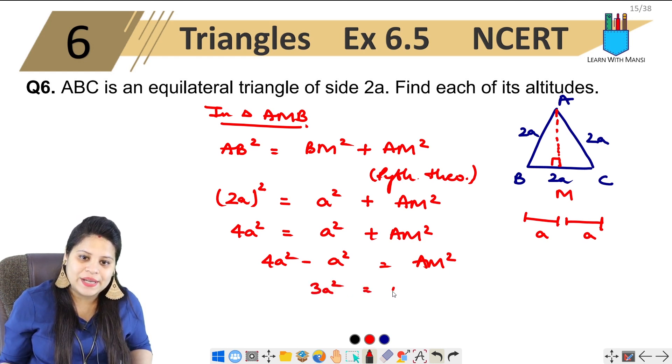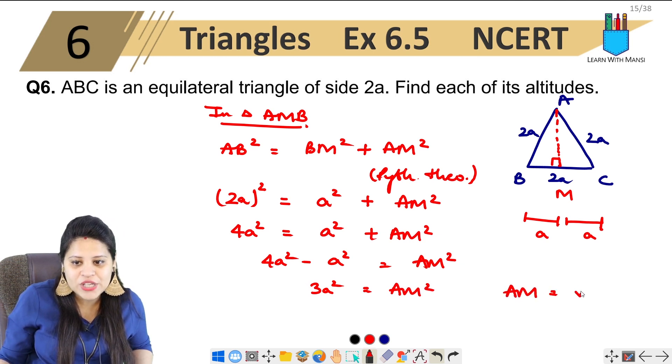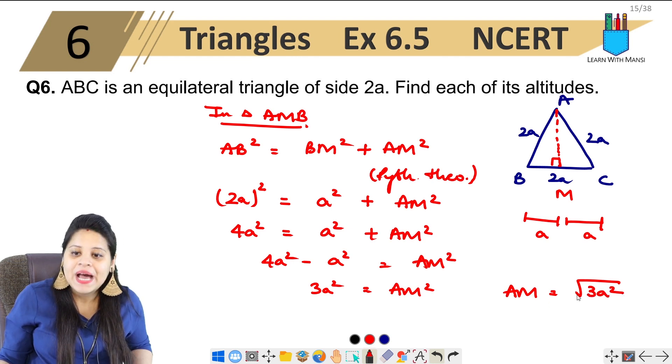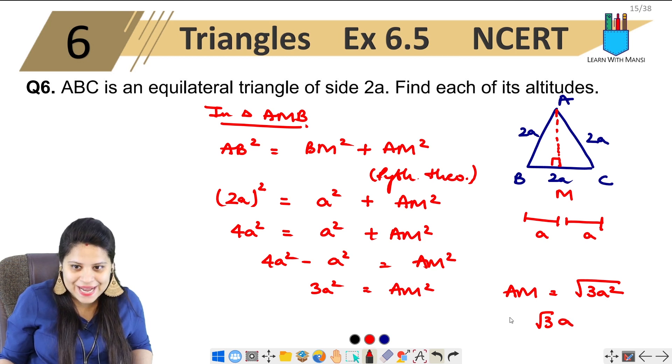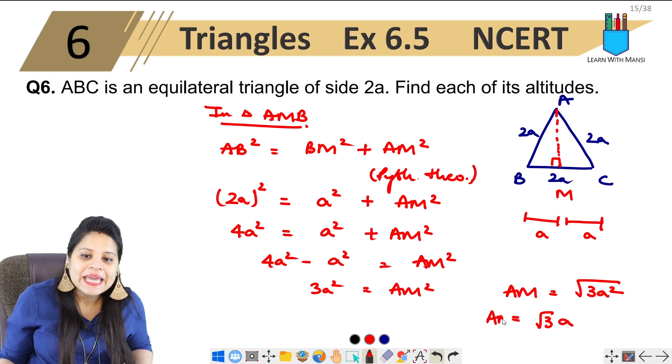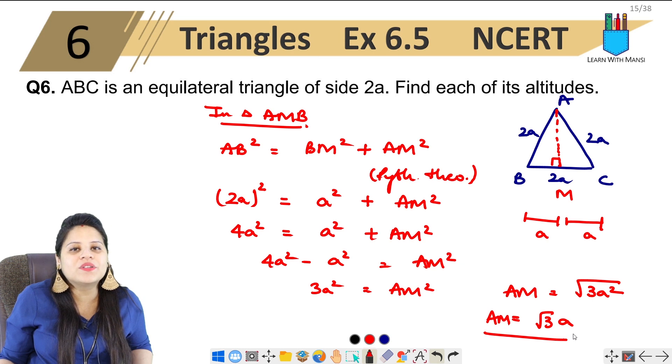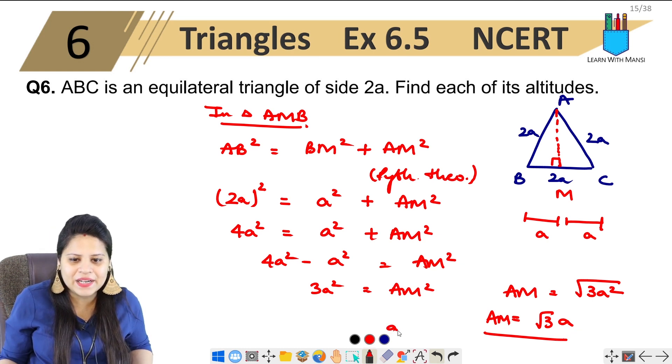3A square equals to AM square. So AM will be under root 3A square. Under root 3 will remain, but A square will come out. So that means AM is under root 3A or A under root 3. You can write either way, it's the same thing.